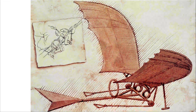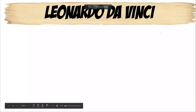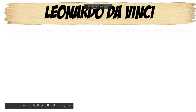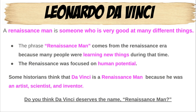For the next part, Leonardo da Vinci — to fill in these blanks we're going to be looking at this slide. Filling in the blanks: Leonardo da Vinci. A Renaissance man is someone who is very good at many different things. The phrase 'Renaissance man' comes from the Renaissance era because many people were learning new things during that time. The Renaissance was focused on human potential. Some historians think that da Vinci is a Renaissance man because he was an artist, scientist, and inventor.